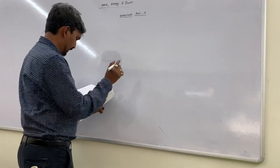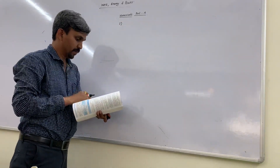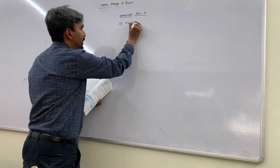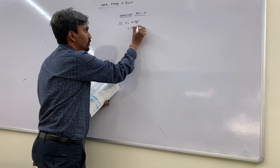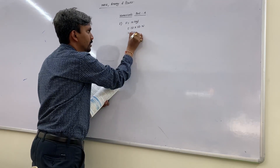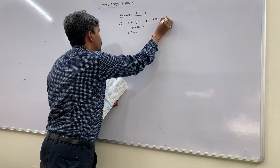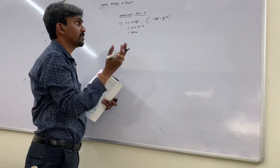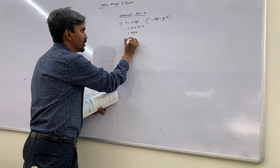First numerical: a body acted upon by a force — the force is given in Kgf, so you have to convert Kgf to Newton. The G value is given as 10, so 10 Kgf × 10 = 100 Newton. The conversion is: 1 Kgf = G Newton. If G is given as 9.8, take 9.8. Displacement S is given as 0.5 meter.